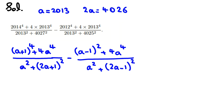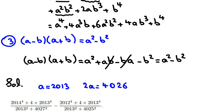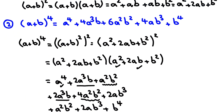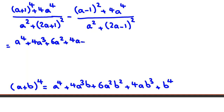Let's calculate these things. The first numerator is (A + 1)⁴. Using the identity (A + B)⁴ with B = 1: A⁴ + 4A³ + 6A² + 4A + 1, plus 4A⁴. All over A² plus (2A + 1)² expanded: (2A)² + 2(2A)(1) + 1² = 4A² + 4A + 1.